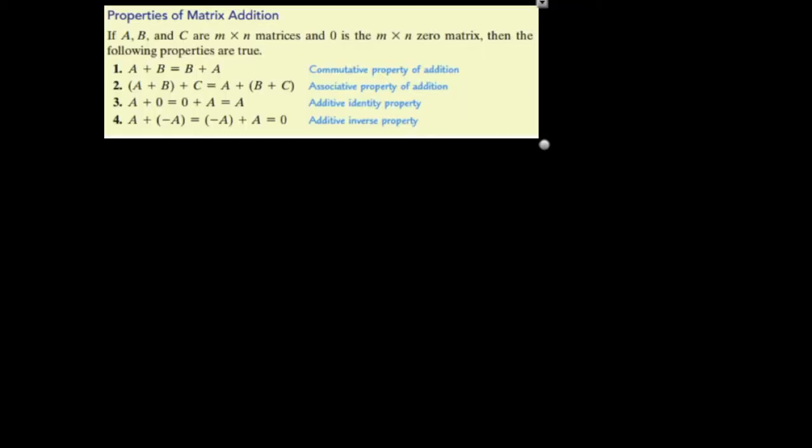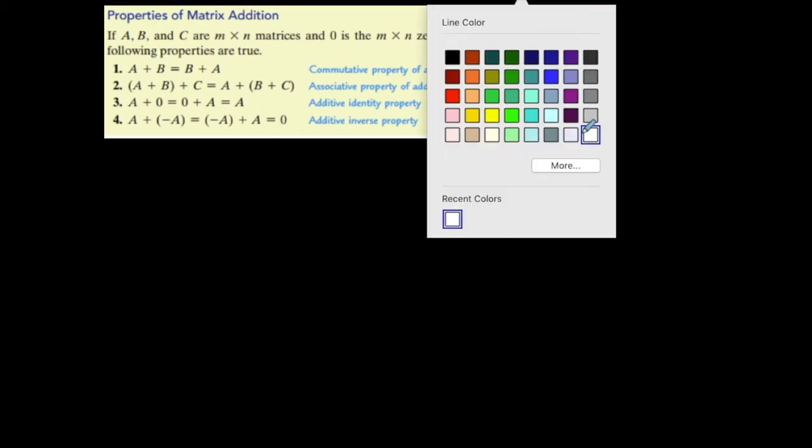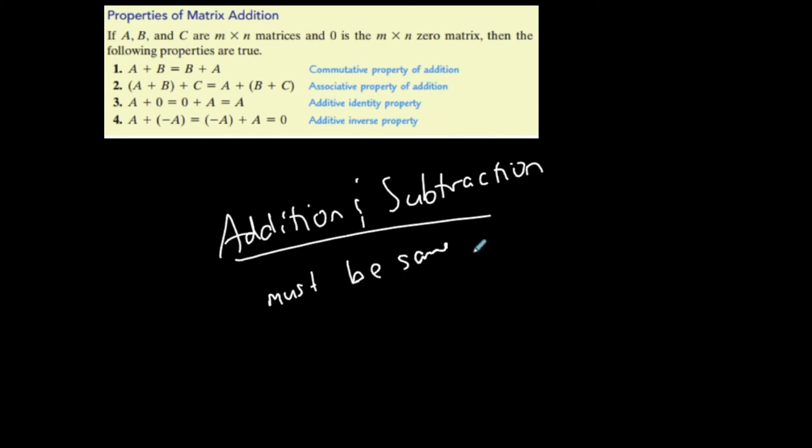In order to add or subtract matrices, they must be the same dimension. So addition and subtraction of matrices must be the same dimension or order, the same dimension.